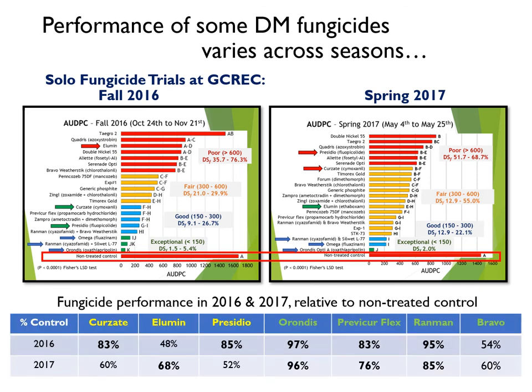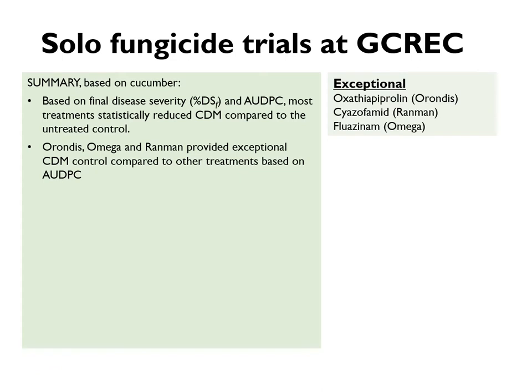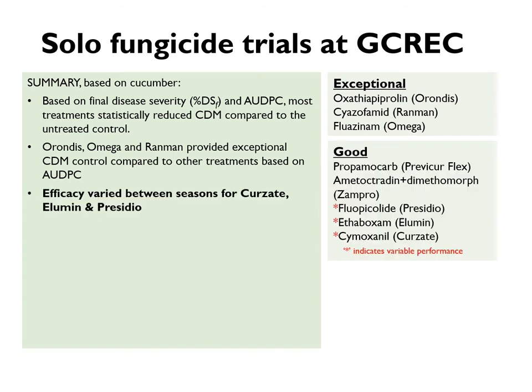This is even easier to see if I put these in a table based on percent disease control. You can see how the performance of Kurze, Elumin, and Presidio differed between the two seasons, while the relative performance of Orondis, Previcure Flex, Ranman, and even Bravo were fairly consistent. In summary, Orondis, Omega, and Ranman have consistently provided exceptional control across numerous trials. Kurze, Elumin, Presidio, Previcure Flex, and Xanpro have also given good control, although some seasonal variation has occurred for Kurze, Elumin, and Presidio.